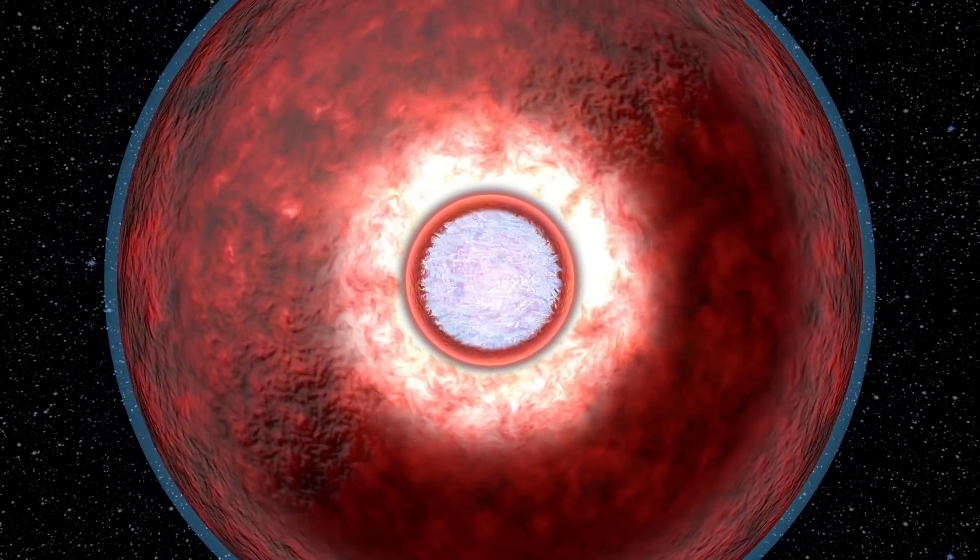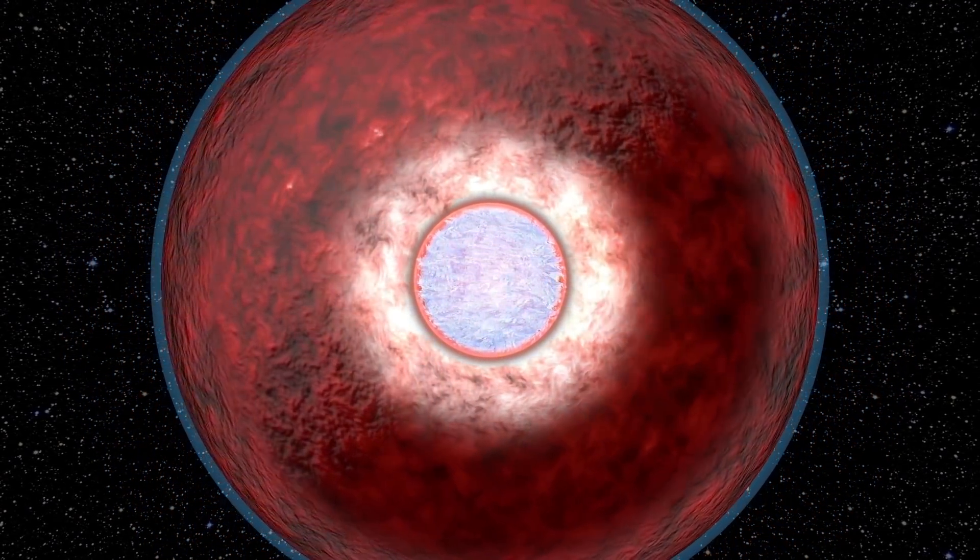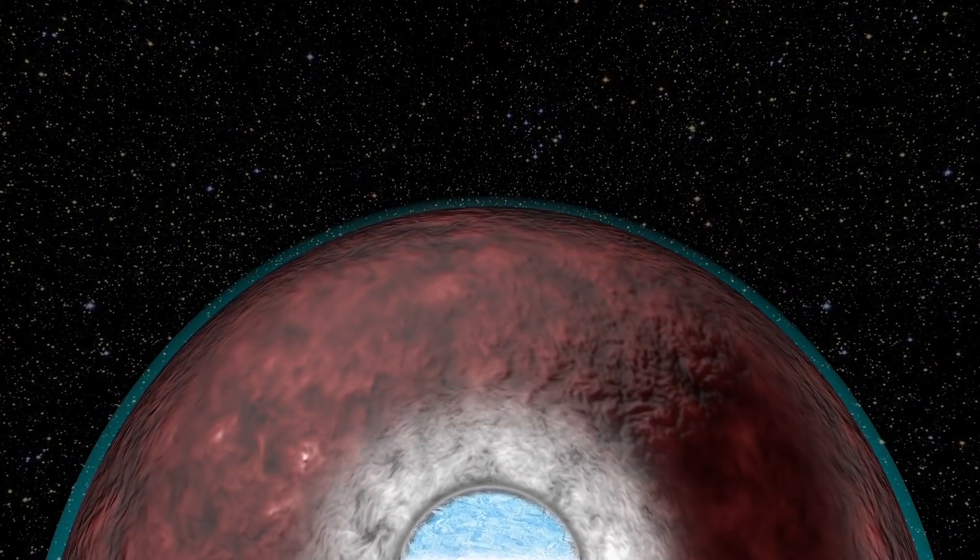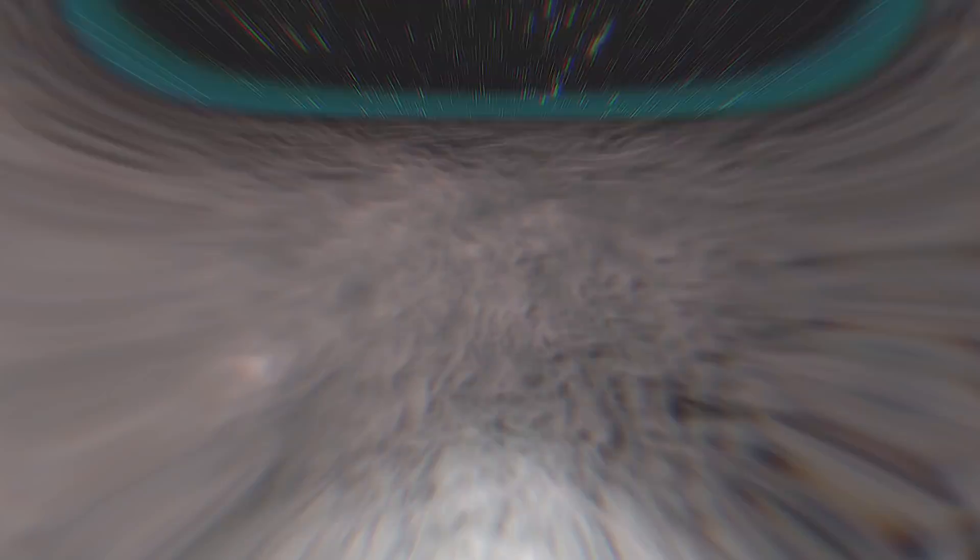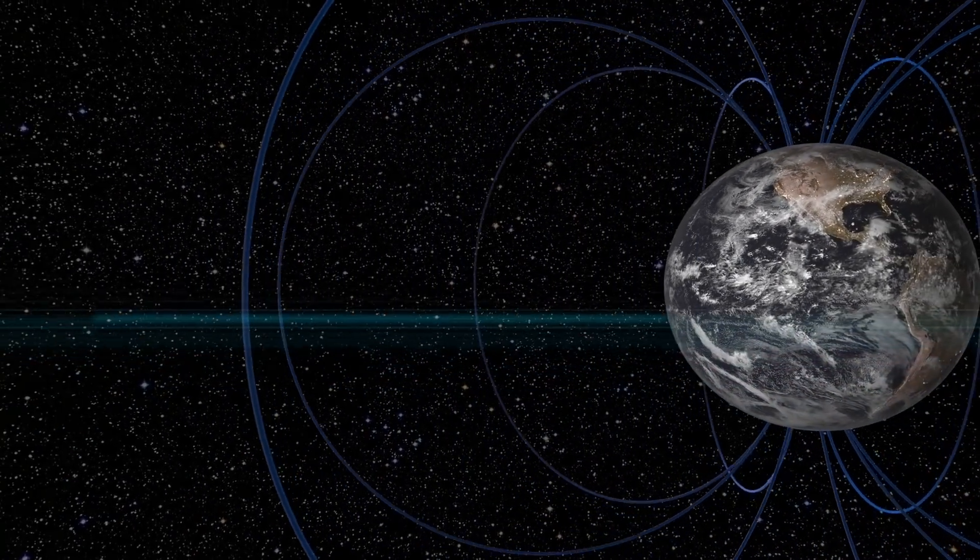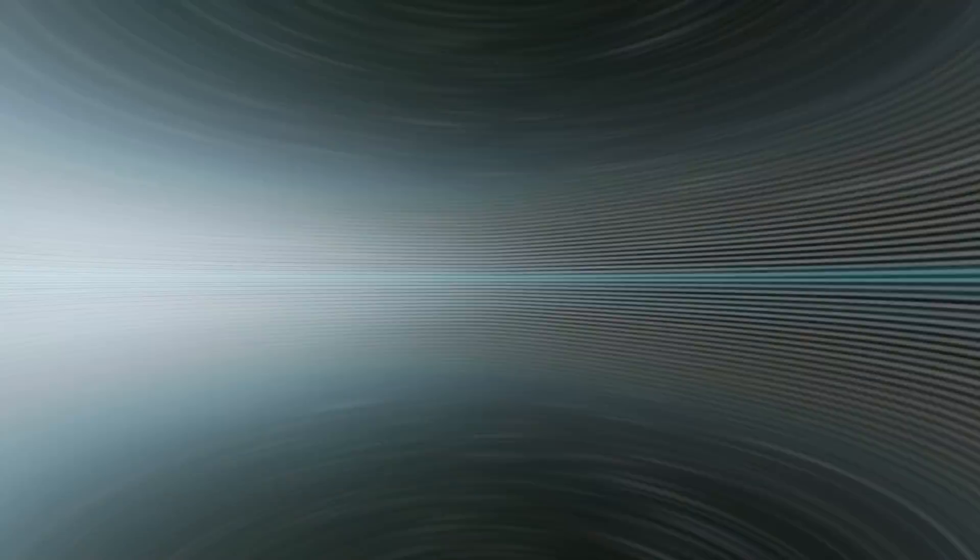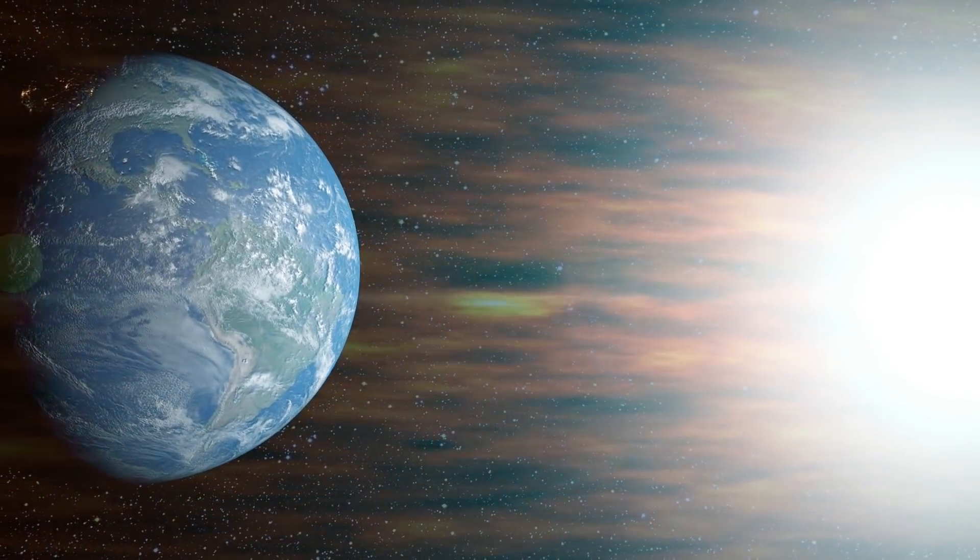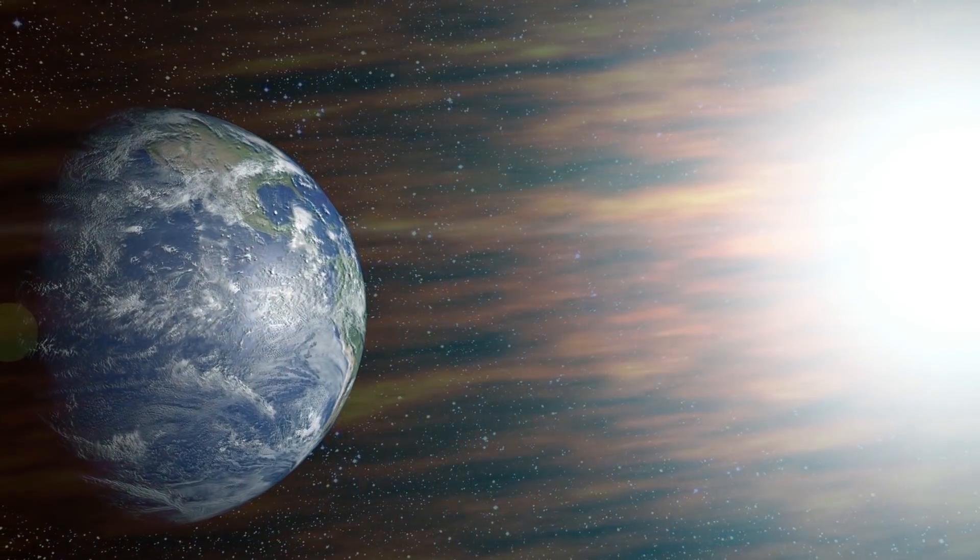When the inner core of our planet freezes, the outer core will stop rotating. The good news? Earth's magma will no longer heat up volcanoes, so they will stop erupting. The bad news is that the Earth will lose its magnetic field forever. The solar wind will blow away our atmosphere in a few hours.